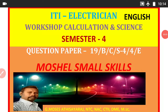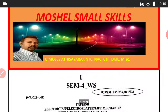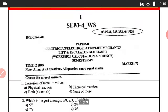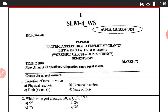Today we are watching the video for ITA Electrician Workshop Calculation & Science Semester 4, 2019 old question paper. Language: English. Dear friends, subscribe to my channel and press the bell button. The full title on the question paper: Trade Electrician, Lift Electro Operator, Lift Mechanic and Lift Escalator Mechanic — 4 Trade Common, WC Semester 4. Total Marks: 75, Time: 2 Hours. All questions carry equal marks.